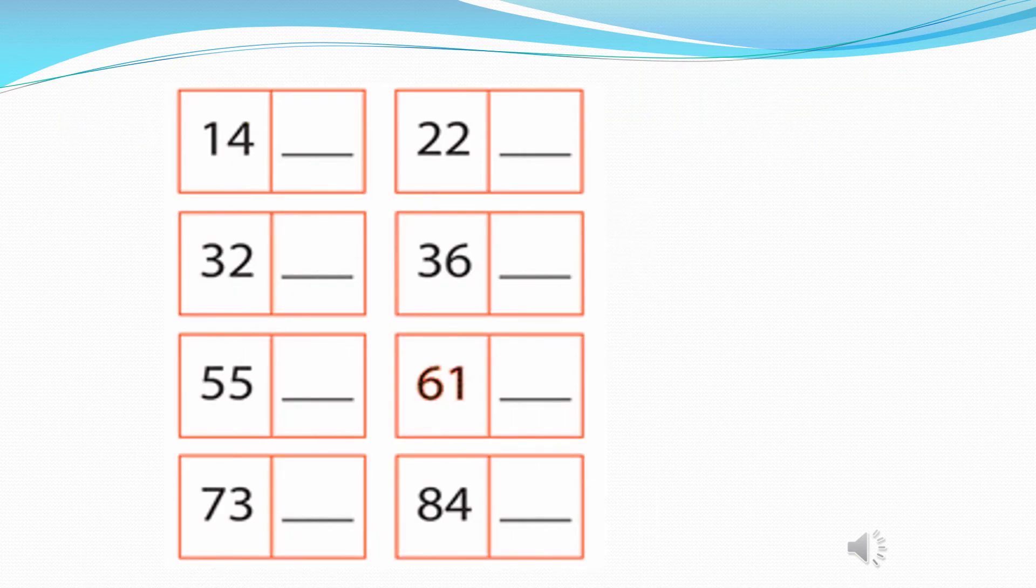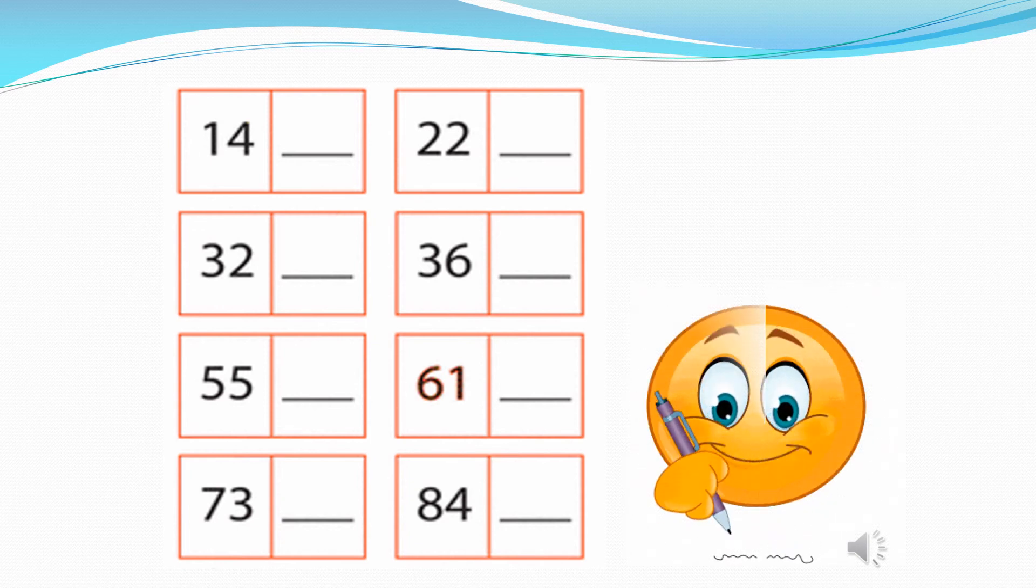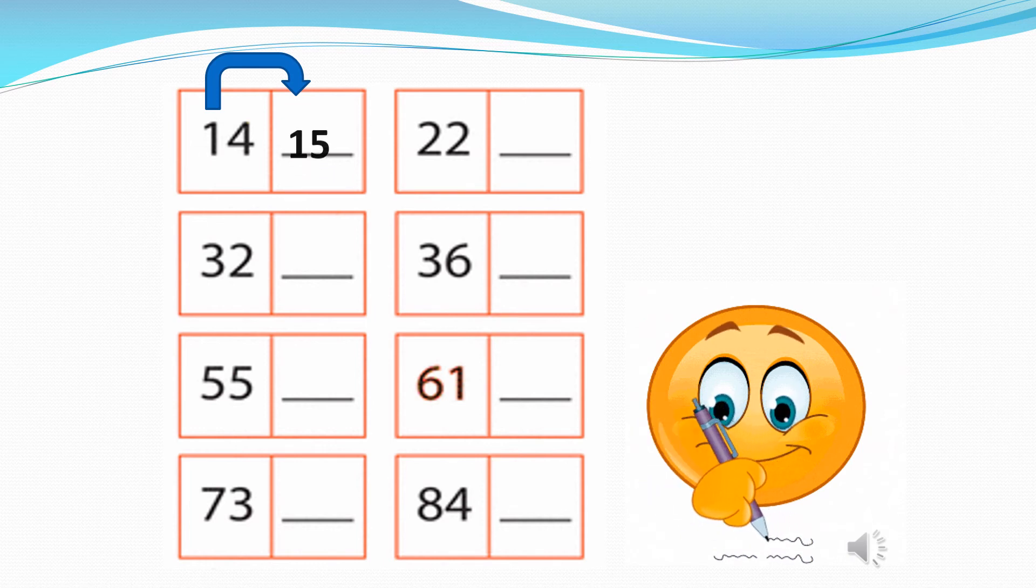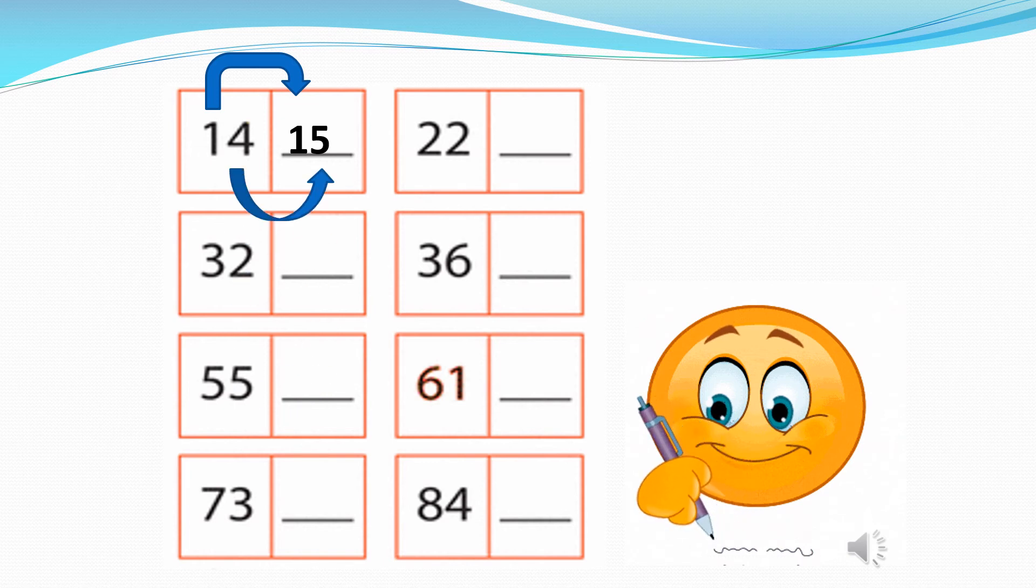So now tell me what number is going to come after number 14? You will copy the same way. And what comes after 4? After 4 comes 5. So 1 and 5 is 15. Did you understand?